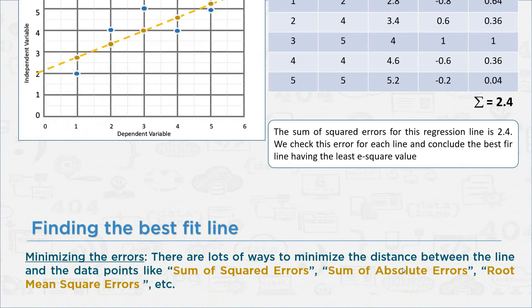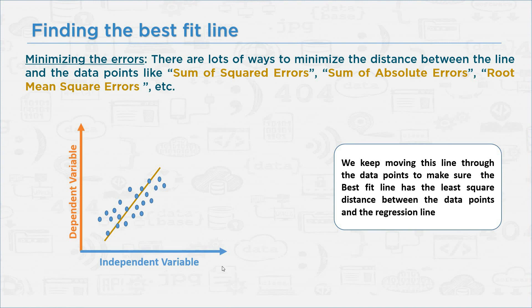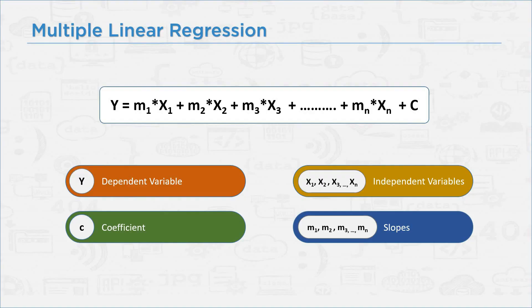The question arises: how do we get the best fit line? We keep moving this line through the data points to make sure the best fit line has the least sum of squares of distances between the line and the data points. Next, multiple linear regression — which is similar to simple linear regression, but with multiple independent variables.